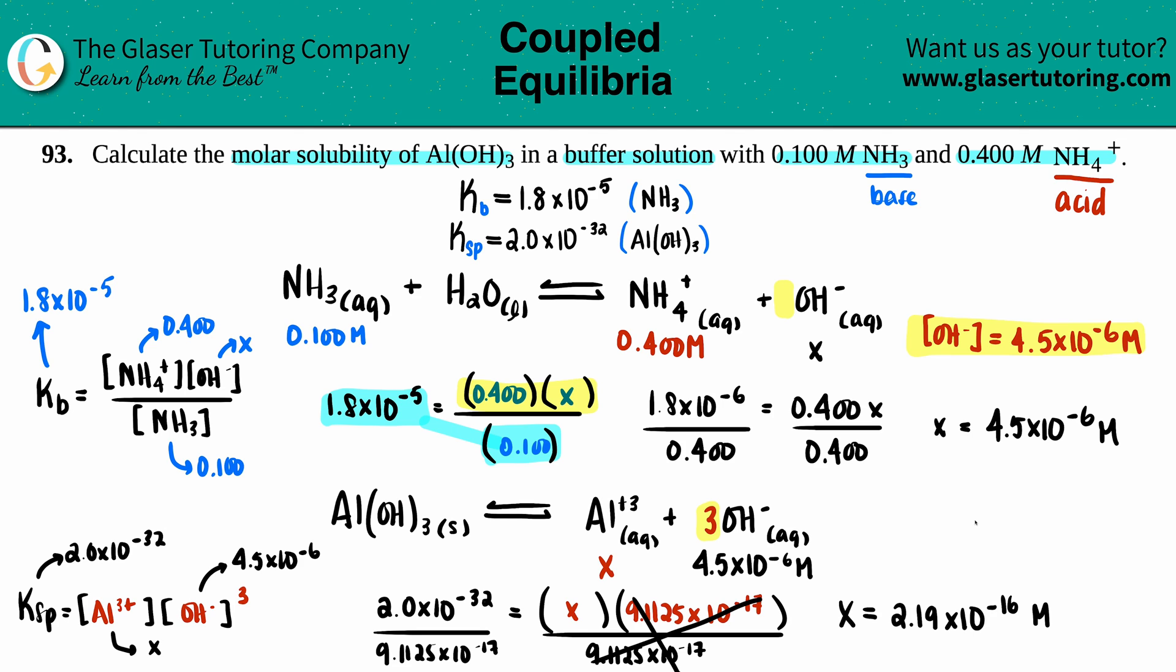Just know that—always go back to the question—they were looking for that molar solubility of Al(OH)₃. Well, even though Al(OH)₃ wasn't in our equilibrium expression, there still is a concentration for it; it just doesn't matter for the equilibrium expression. So you can treat this as saying I only had one Al(OH)₃ and this is only one x, so your molar solubility is always going to be the x that you're solving for. In this case, the molar solubility is 2.19 × 10⁻¹⁶ molarity of Al(OH)₃.